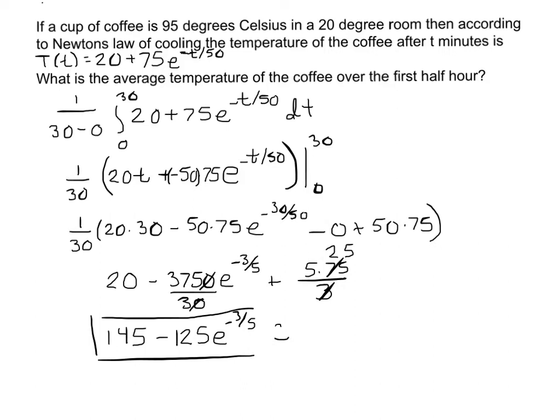Average value is pretty easy — it's just a matter of integrating the function over the interval and dividing by the total length of that interval. Now let's take a look at arc length.